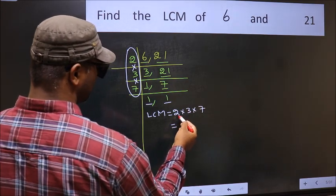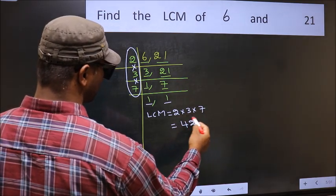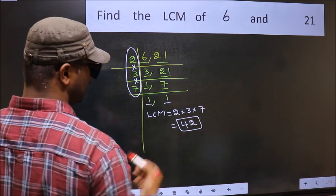When we multiply these numbers, we get 42. That is our LCM.